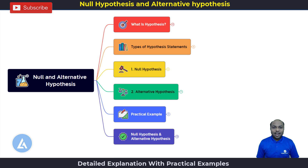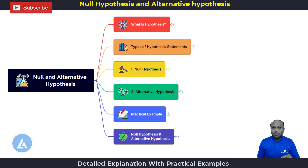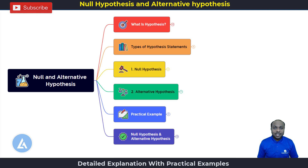Hello friends, welcome back. Today we are going to understand another important concept from Lean Six Sigma. Today's topic is from the concept of hypothesis testing. As a part of this hypothesis testing, we are going to learn what is a null hypothesis and an alternative hypothesis, what is the difference between them, and what is their importance with the help of a practical example. So let's begin.